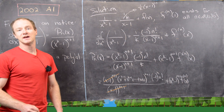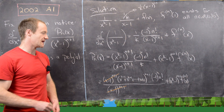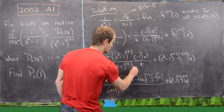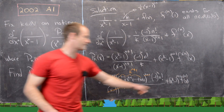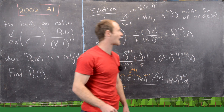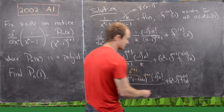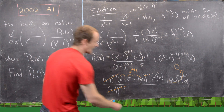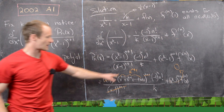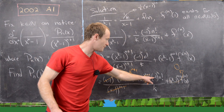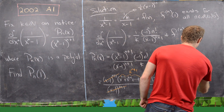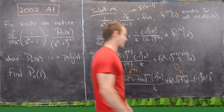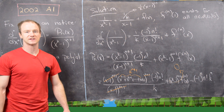Evaluating at x equals 1: the sum x^(k-1) + ... + x + 1 becomes k, so the first term gives k^(n+1) times (-1)^n · n!/k. The second term involves plugging x=1 into (x-1)^(n+1) · (nth derivative of f), which gives 0 times something finite, so that term vanishes. This leaves (-1)^n · n! · k^n as the final answer.